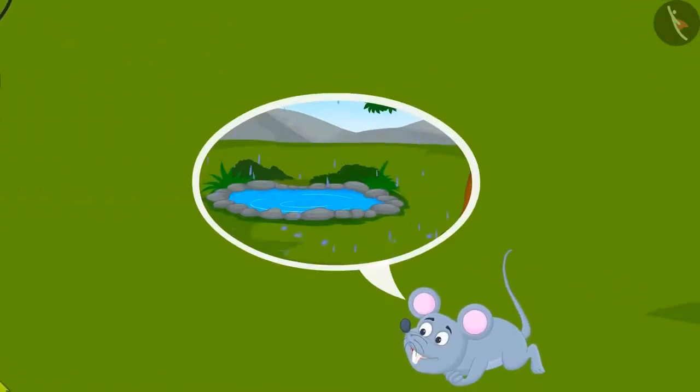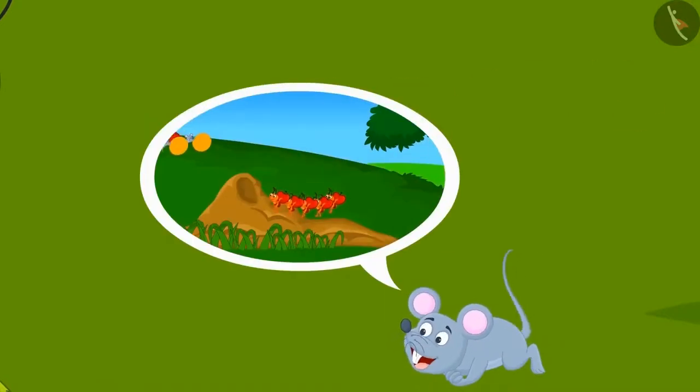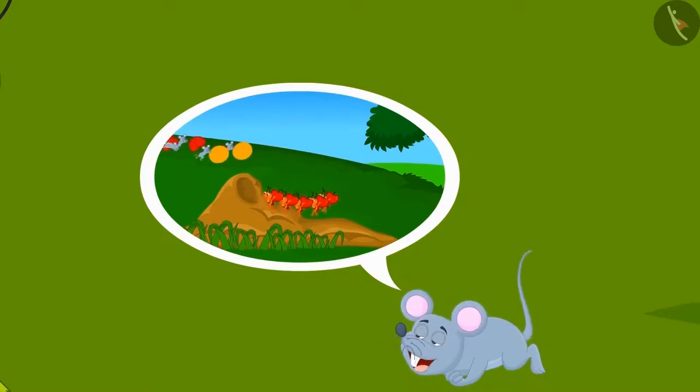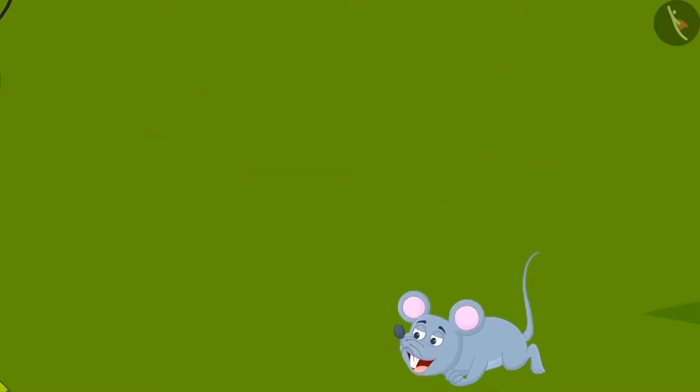The rats continued to walk and told Tinku that the rainy season would be here soon and they will find it very difficult to find food in that season. So the ants and the rats were gathering food for the rainy season.